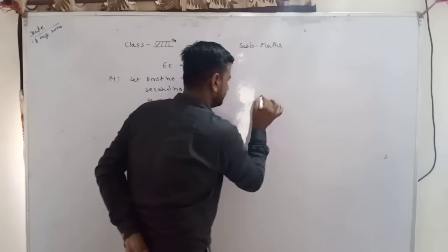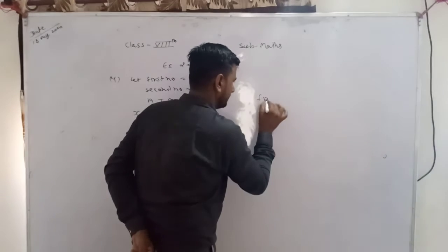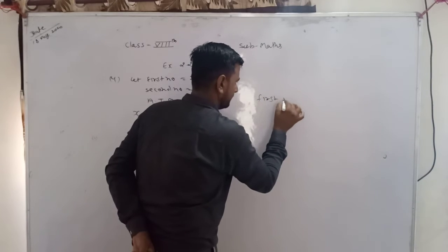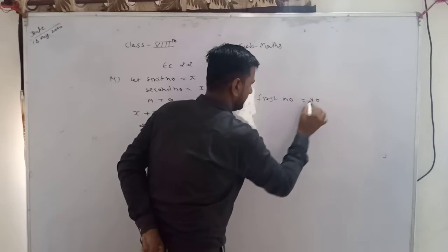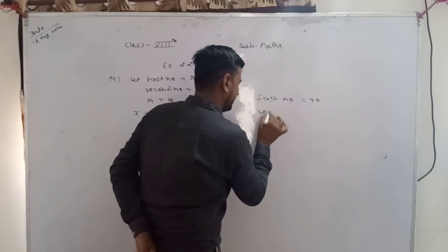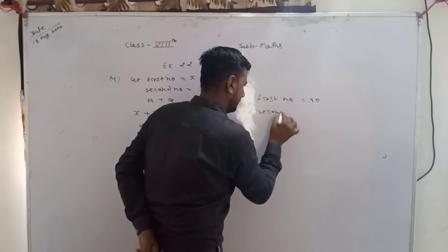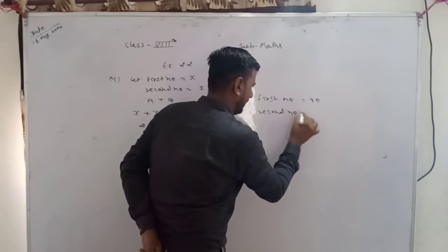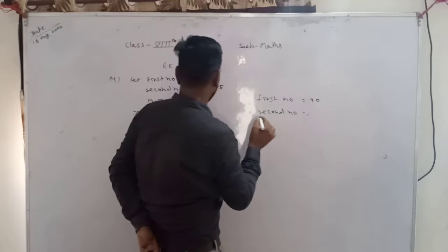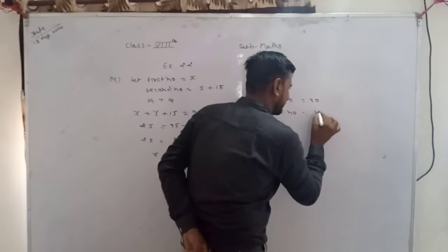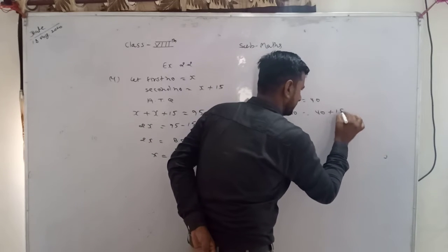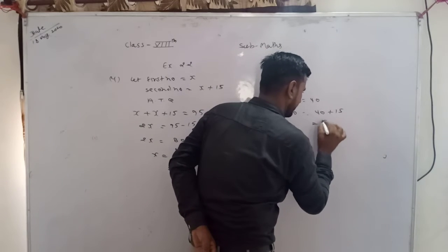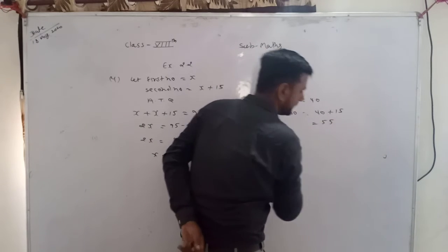First number is 40. Second number: x plus 15 = 40 plus 15, तो second number क्या हो गया: 55।